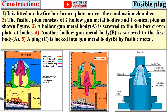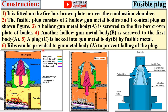Plug C is locked into the gun metal body B by fusible metal, also called fusible material. Ribs can be provided to gun metal body A to prevent the plug from falling into the furnace. So the plug is held up to a certain point with the help of the ribs, otherwise it would fall into the furnace.